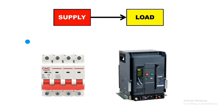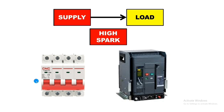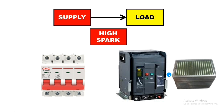When we connect supply to a load, if the load current is high then a very high spark is generated. In an MCB, if the load ampere is low then spark is generated but the spark amount is low. In an air circuit breaker, because it is used for industrial purposes and the load is very high, if supply is connected to the load then a very high spark is generated.